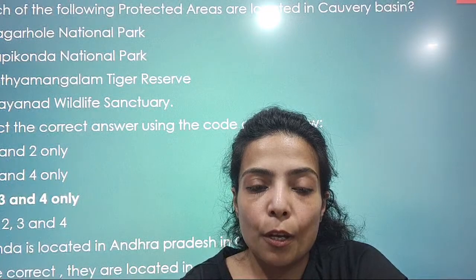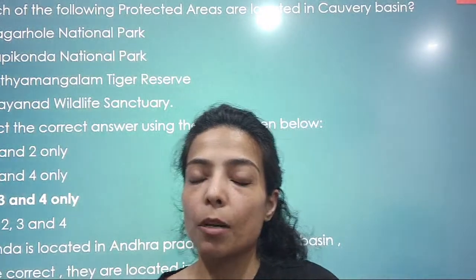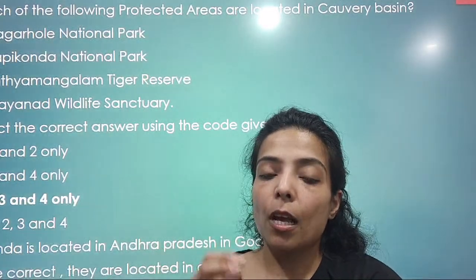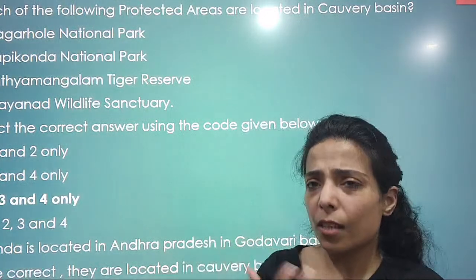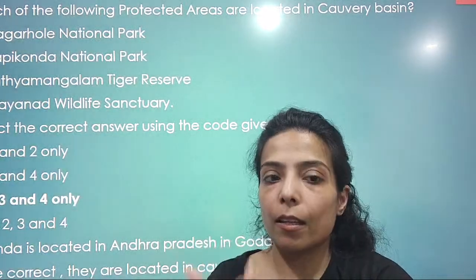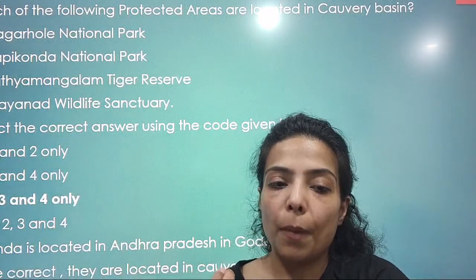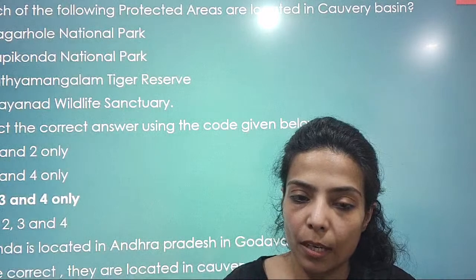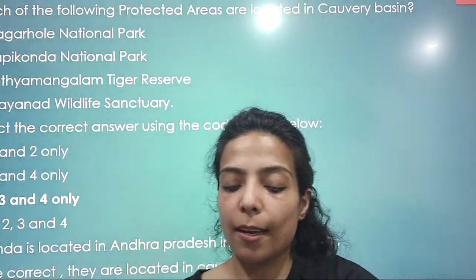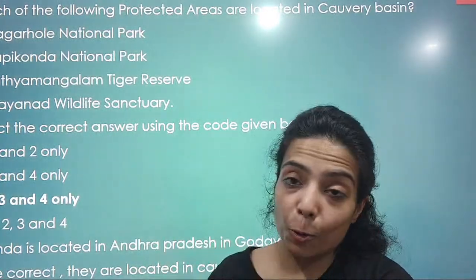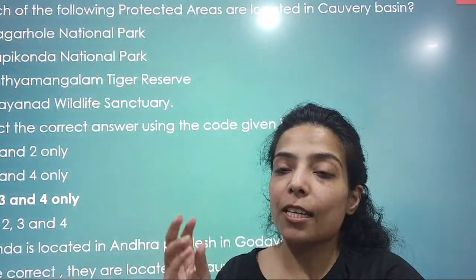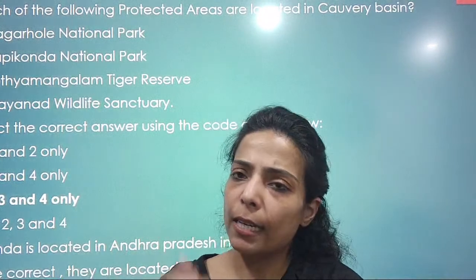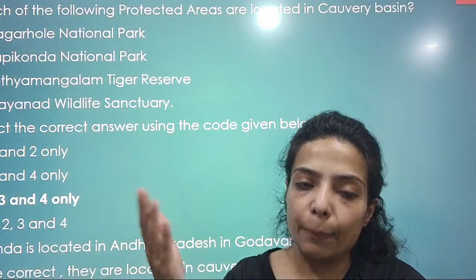Which of the following protected areas are located in the Kaveri Basin? The options were: Nagarhole National Park, Papikonda National Park, Satya Mangalam Tiger Reserve, and Wayanad Wildlife Sanctuary. Papikonda is in Andhra Pradesh — the word 'Konda' in the name generally indicates Andhra Pradesh — so it is in the Godavari Basin, not Kaveri. Eliminating Papikonda, the remaining three — 1, 3 and 4 — were the right answer. Papikonda National Park is in the Godavari Basin, and the rest are in the Kaveri Basin.